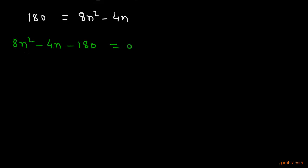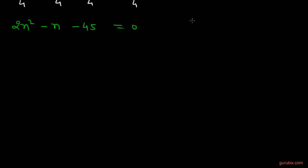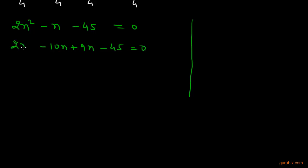We observe that all terms of the quadratic equation are divisible by 4, so dividing throughout by 4 gives 2n² − n − 45 = 0. We now factorize this by splitting the middle term, getting 2n² − 10n + 9n − 45 = 0.